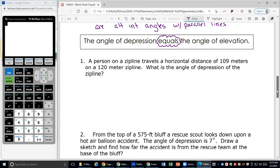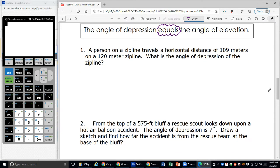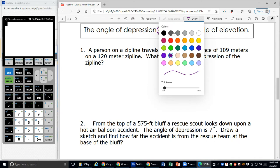All right. So now let's look at this first example. A person on the zipline travels a horizontal distance of 109 meters on a 120 meter zipline. So let's talk about what that's going to look like.